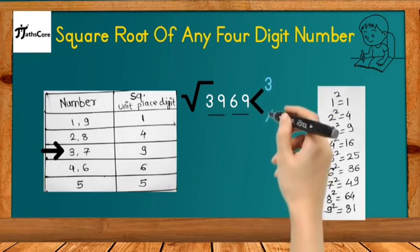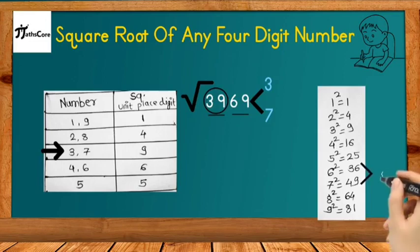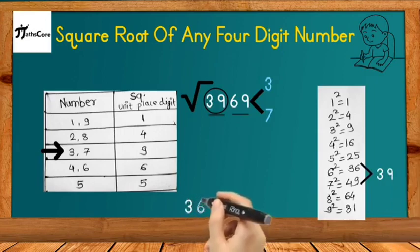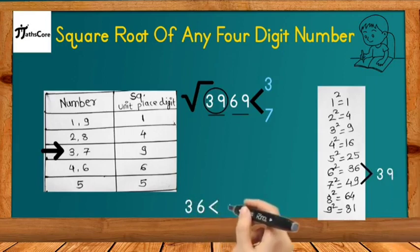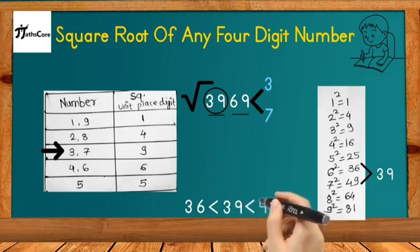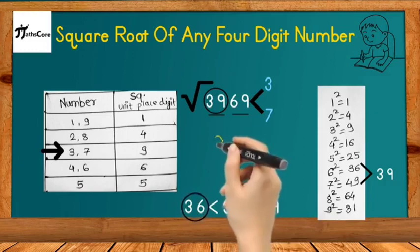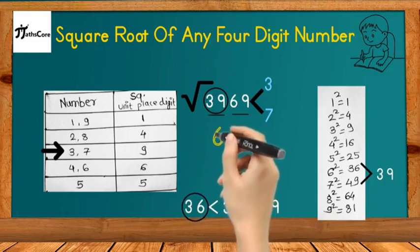Now focus on 39. We need to find which two perfect squares 39 lies between. The answer is 6² = 36 and 7² = 49. So 39 lies between 36 and 49: 36 < 39 < 49. We select the lesser perfect square, which is 36, and its square root is 6. So 6 is the tens place digit of the square root of 3969.